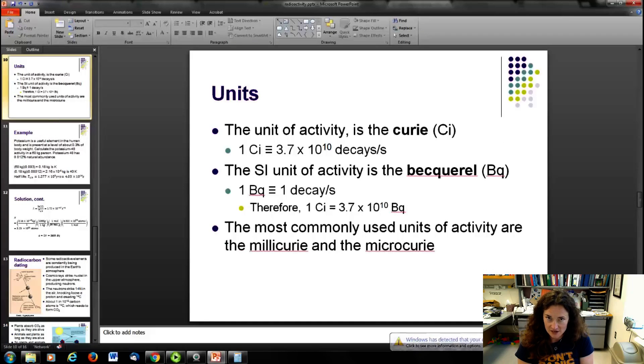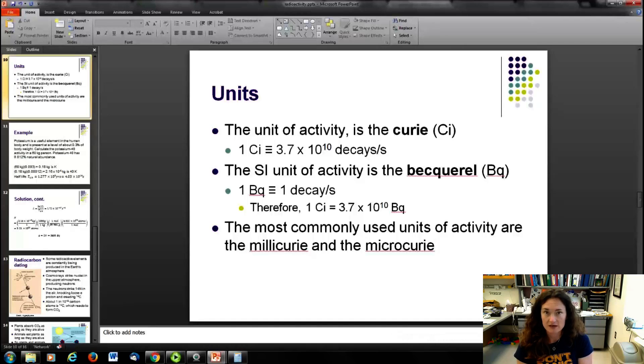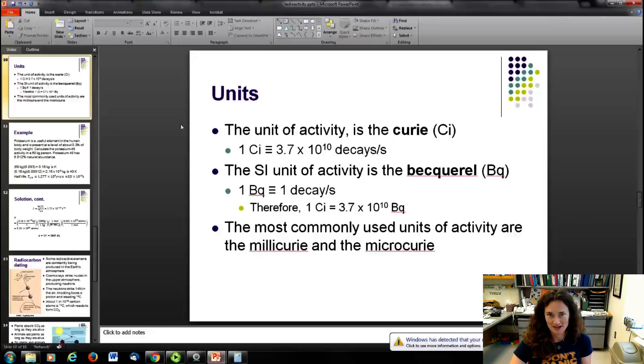The units of activity, the SI units of activity, are named after the pioneers of radioactivity. So the Curie is a very large unit of radioactivity, as is perhaps befitting the Curies who dealt with some really hot radioactive stuff and got a huge radiation dose. So one Curie is 3.7 times 10 to the 10th decays per second. And then the SI unit of activity is the Becquerel, which is one decay per second. So one Curie is 3.7 times 10 to the 10 Becquerels. And the most commonly used units of activity are millicuries and microcuries. So that gives you an idea of how big the Curie is.